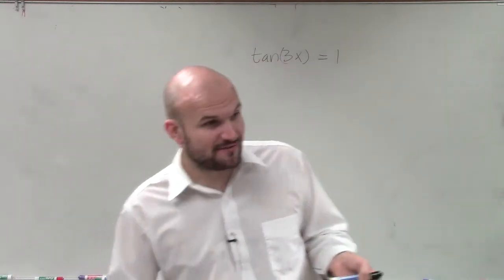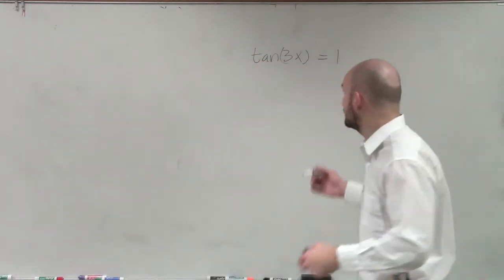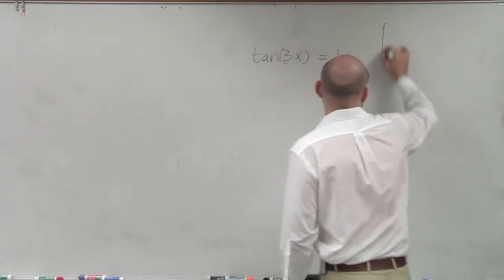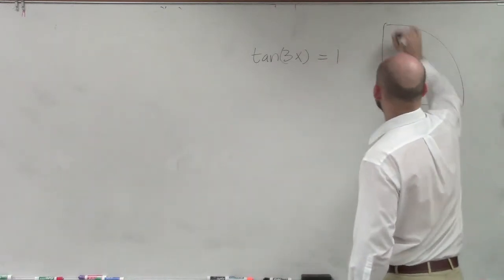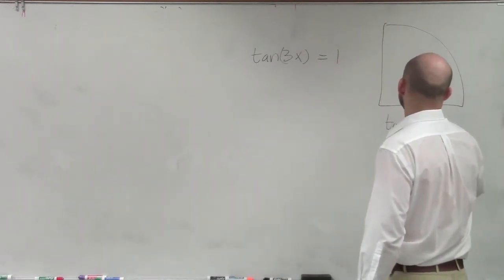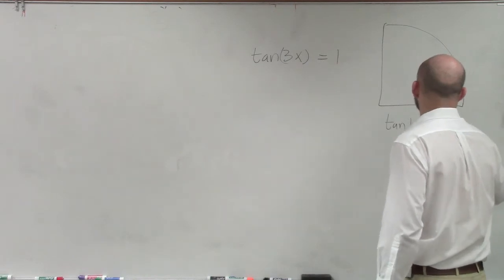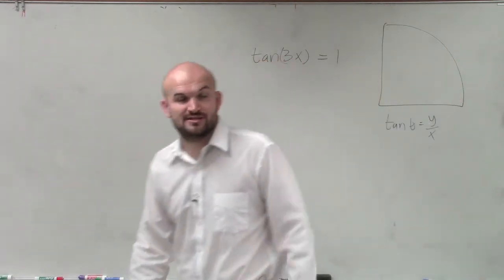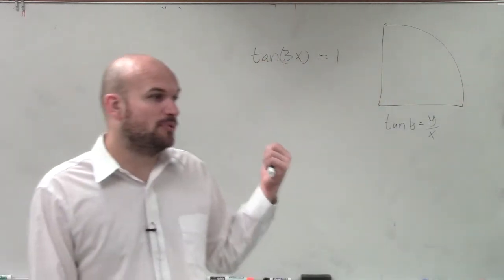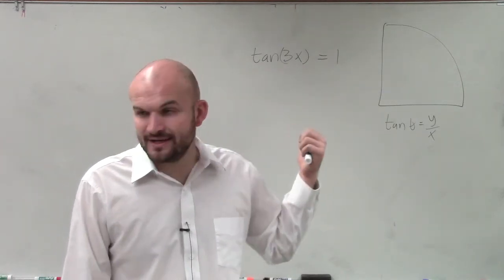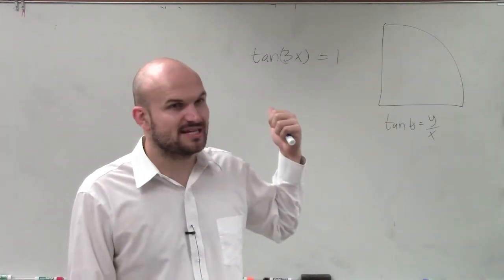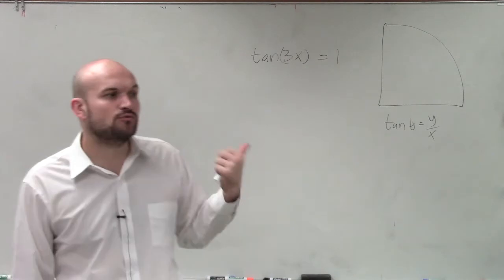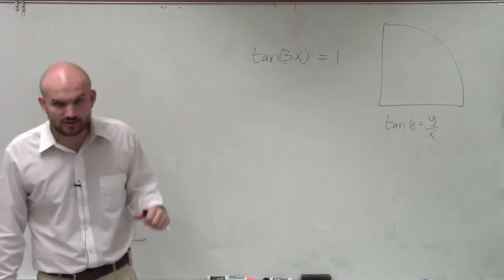Now again, tangent becomes a little bit more difficult when looking at the unit circle because we need to remember, when I go and look at my points on the unit circle, tangent of theta is your ratio of your y coordinate over your x coordinate. So we're not looking for the point 1. We're not looking for an x or y coordinate that's 1. We're looking for when is the ratio of my y and my x coordinate equal to 1.